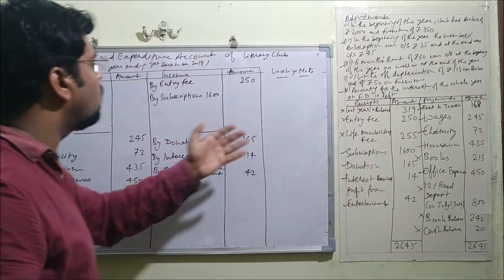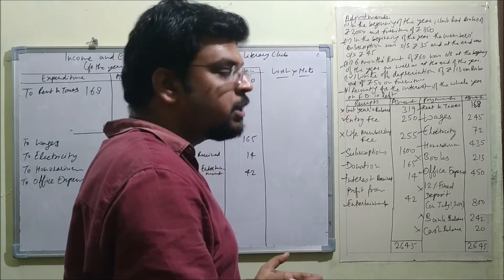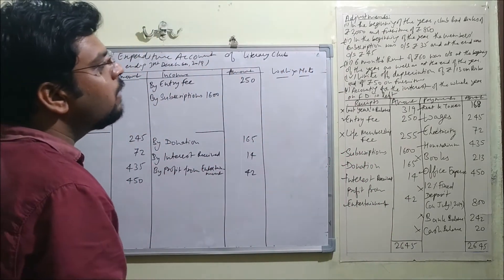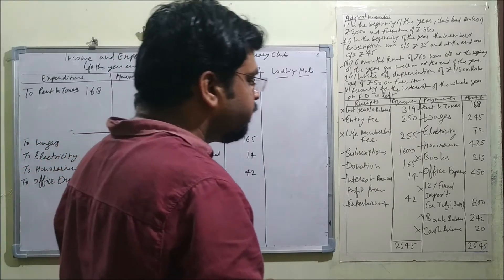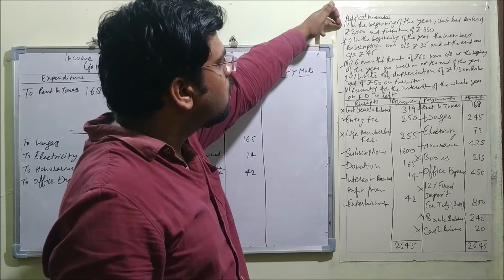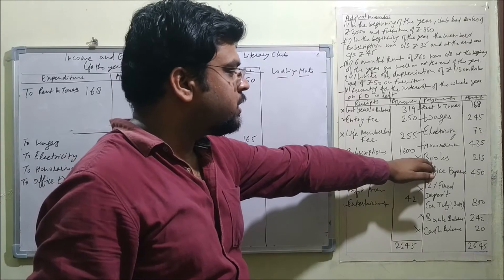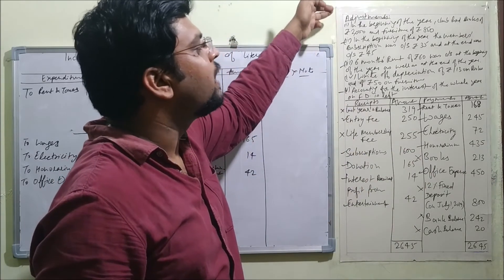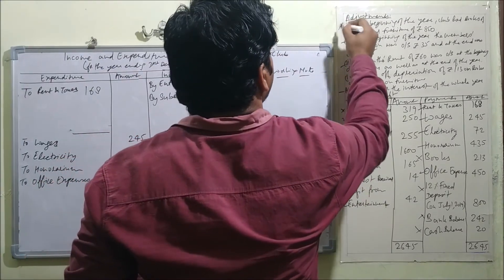The first adjustment: at the beginning of the year the club had books of ₹2,000 and furniture of ₹850. This relates to the opening balance and is relevant for the balance sheet only; there is no requirement in the income and expenditure account, so we discard it here.